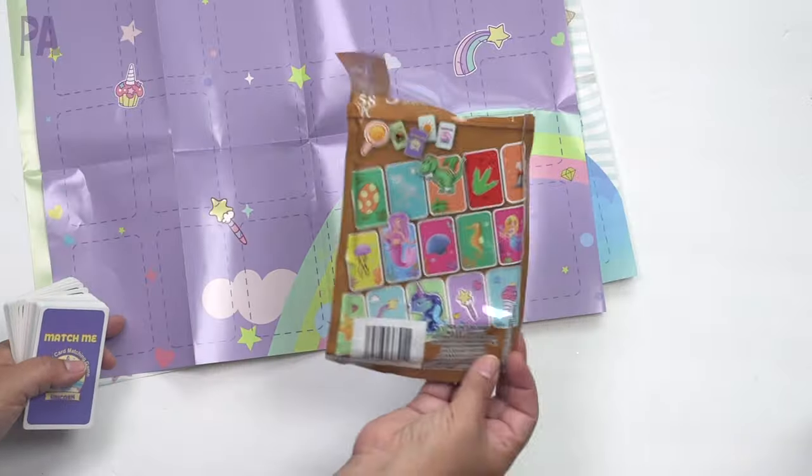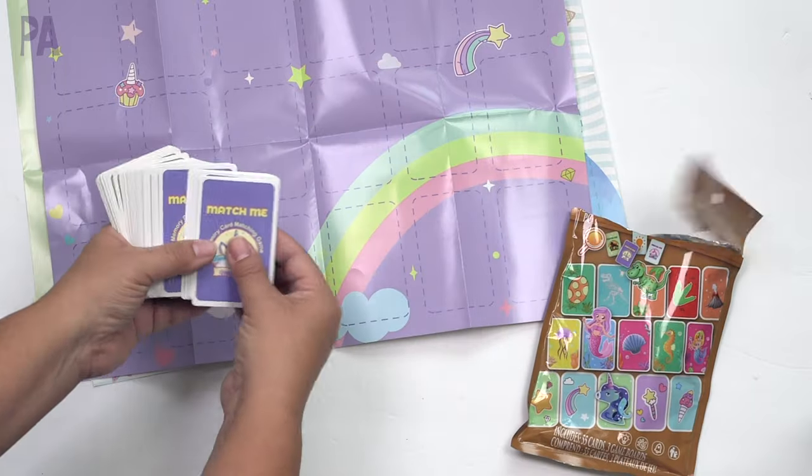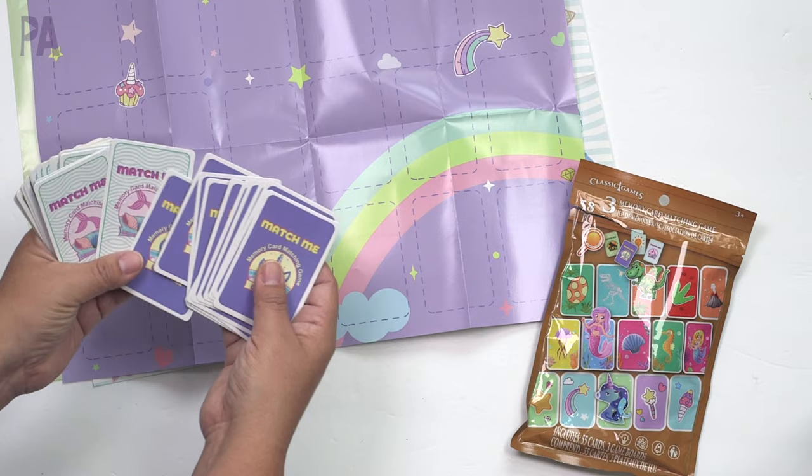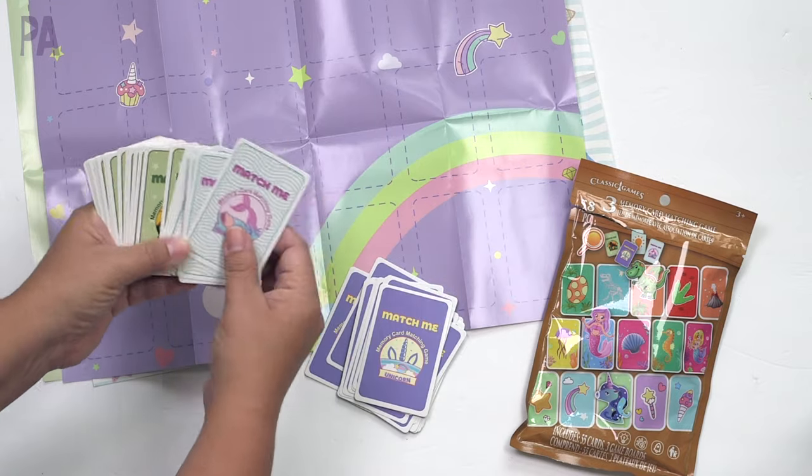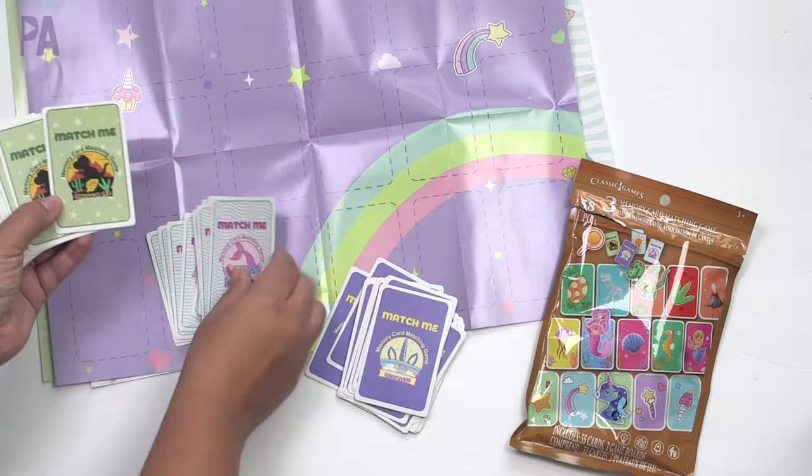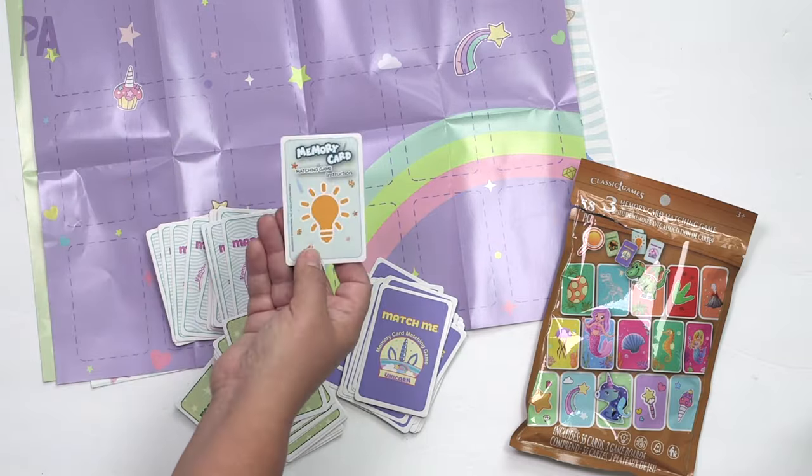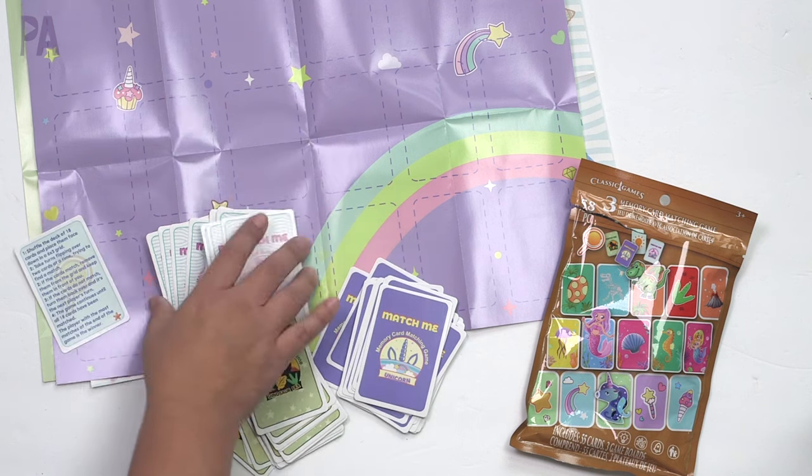Then we have our deck of cards. There's no other further instructions. So I'm assuming it's just a plain old memory game. So we have, oh, there are three decks of cards. Okay. So we got this one. This one's the mermaid. Each card back matches the mat that you use with it. Clever. And then here are the instructions. And it looks like it's just your traditional memory game.